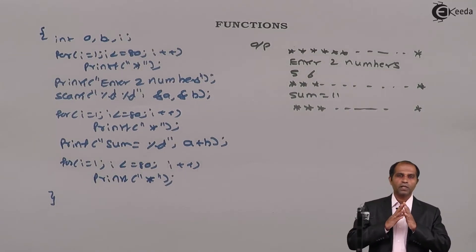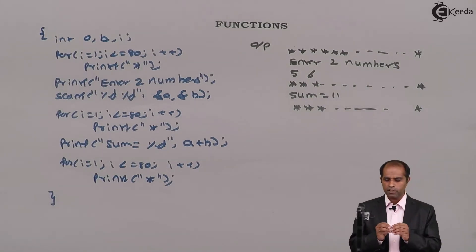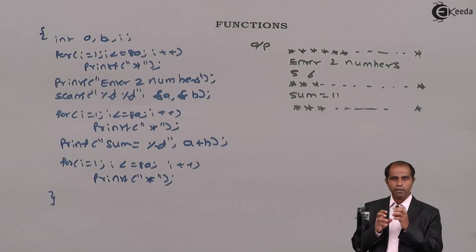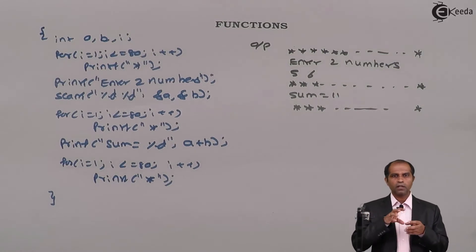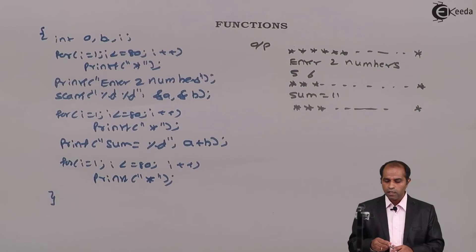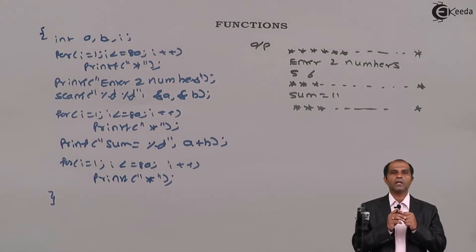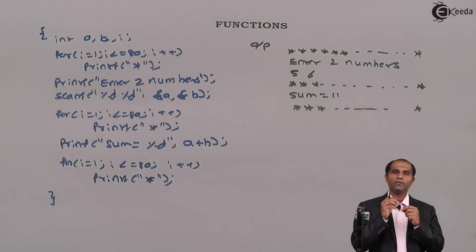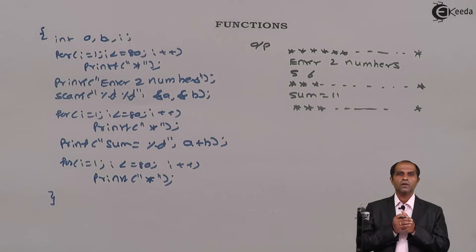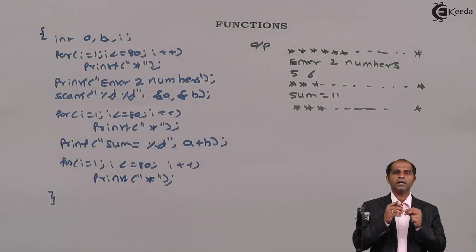From a user's point of view this program is perfectly fine — it delivers the expected output. But from a programmer's perspective, this program is very poor — poor in the way of coding, poor in writing instructions. As a programmer I should always avoid rewriting the same code again and again. Looking at this program, some instructions have been used again and again at several places.